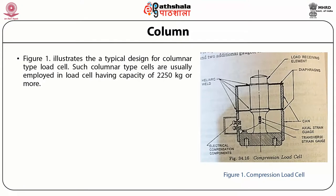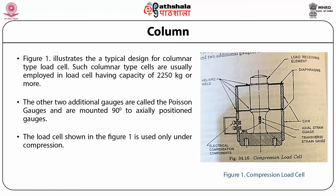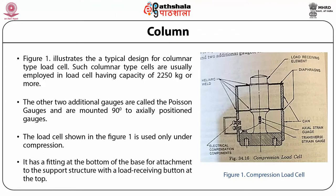First is column. Figure 1 illustrates the typical design of the columnar type load cell. Such columnar type cells are usually employed in load cells having capacity of 2250 kg or more. It has two strain gauges called active gauges that are bonded axially. The other two additional gauges are called Poisson gauges and are mounted 90 degrees to the axially positioned gauges. The load cell shown in Figure 1 is used only under compression. It has a fitting at the bottom of the base for attachment to the support structure with a load receiving button on the top.